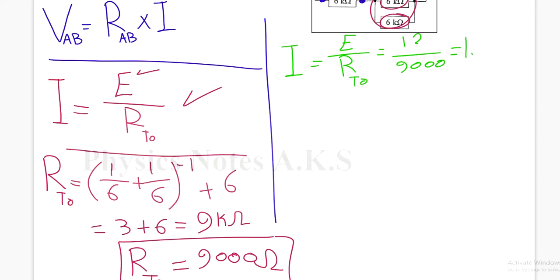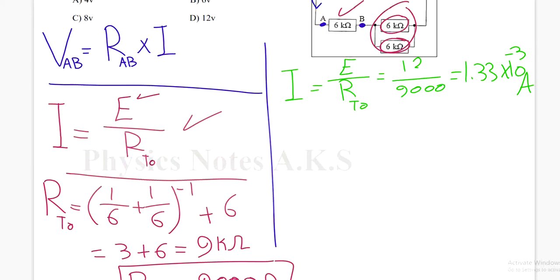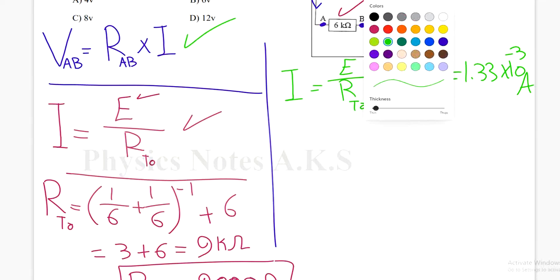1.33 × 10^-3 ampere. I got the current. Why do I need the current? I need the current here to find the potential difference between A and B.